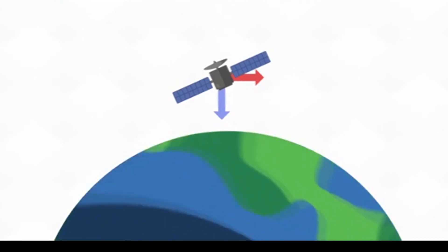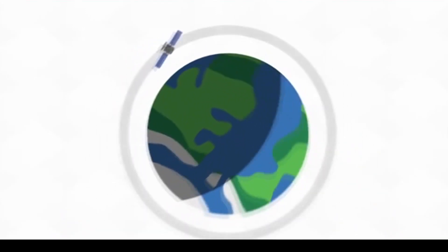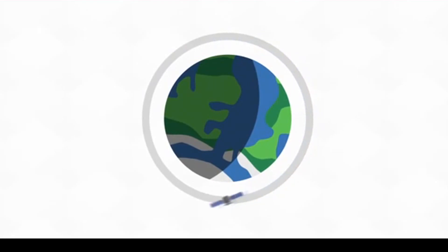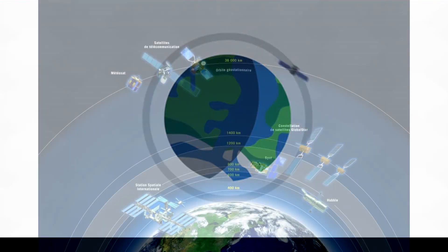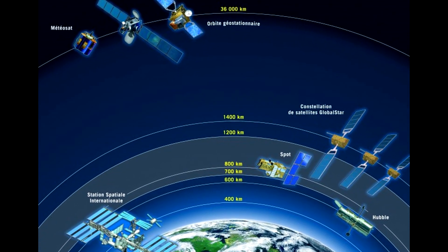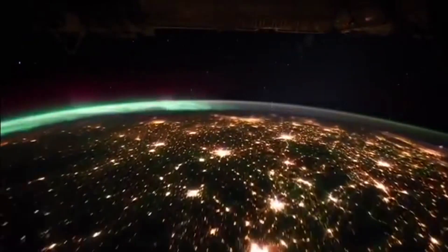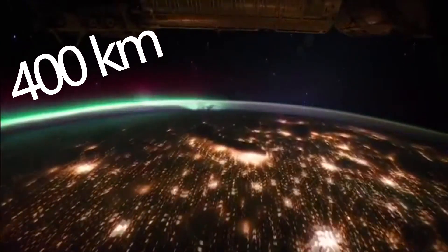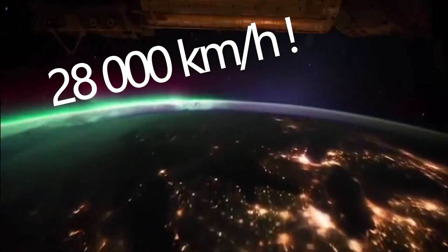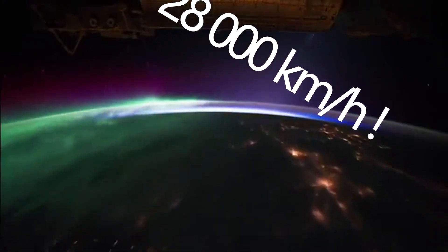If a satellite is closer to the Earth, it must travel faster to maintain its orbit. The most common orbit is a low-Earth orbit, with an altitude between 160 km and 2,000 km. For example, the International Space Station orbits about 400 km above Earth, and it has a speed around 28,000 km per hour to stay in this orbit.